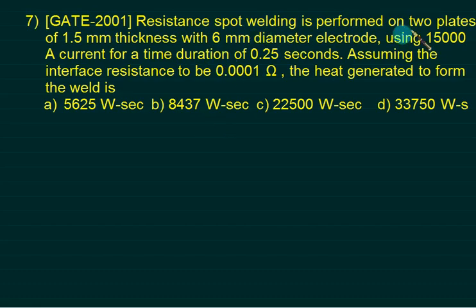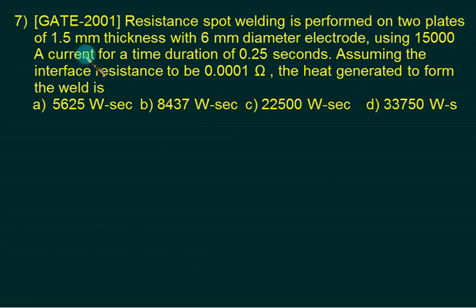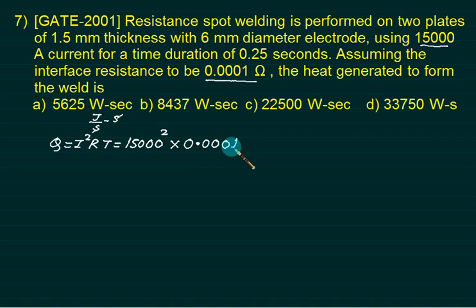Resistance spot welding is performed on two plates of 1.5 mm thickness with 6 mm diameter electrode using 15,000 current for a duration of 0.25. Electrical interface resistance is given. You want to find out heat generated to form the weld. Watt per second is same as Joule per second. It means that we want our answer as I square into R multiplied by time. I is given as 15,000, electrical resistance is 0.0001, time is 0.25. Whatever this answer come is Joules and Joule is same as Watt per second, 5,625. Choice A is correct.